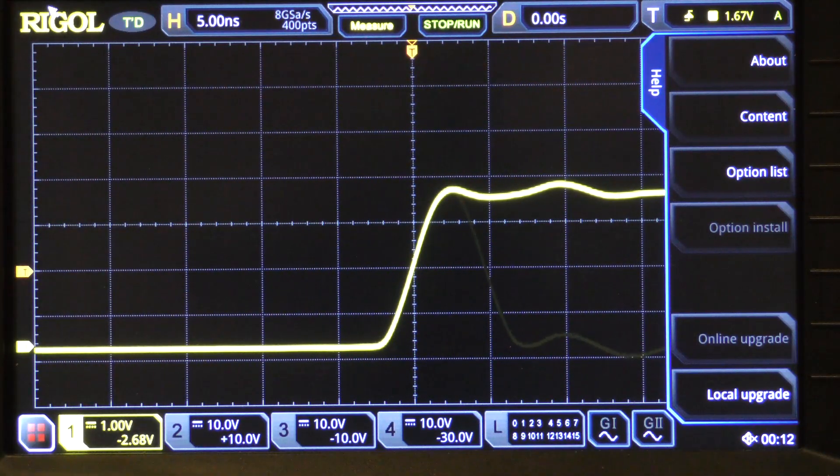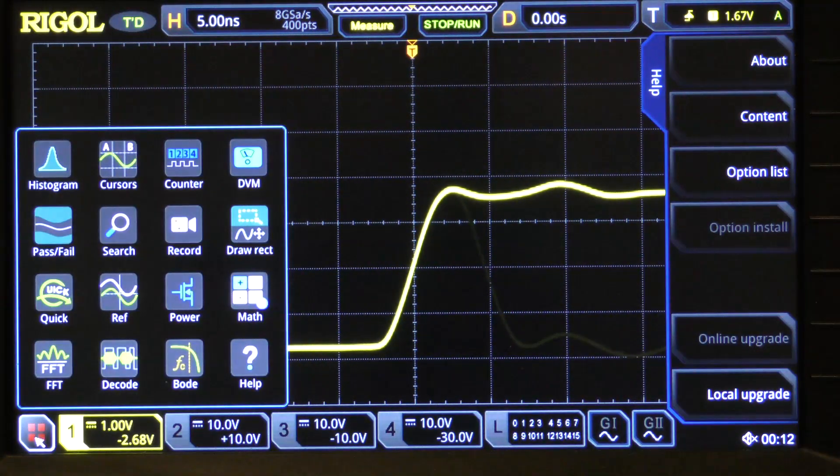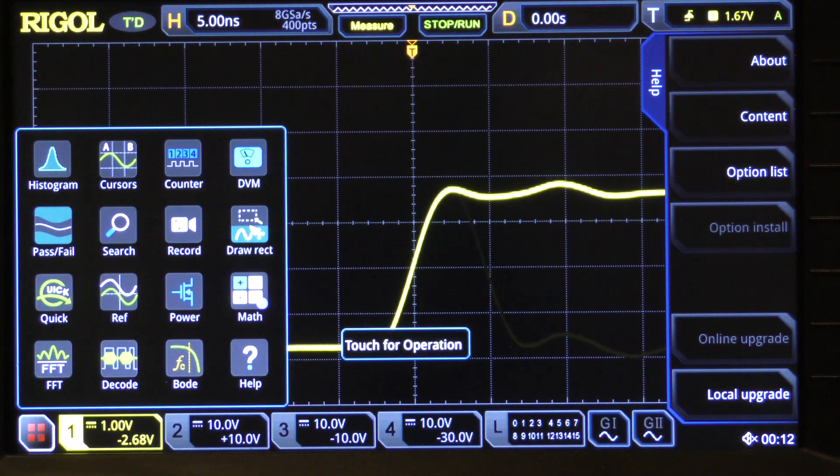Zone trigger, to enable a zone trigger, what you do is you draw a rectangle, just call it a box on the screen. Now there's a number of ways to do that. One is you can use the touch screen and your finger to do that or you can click on draw a rectangle here in the menu and notice it says touch for zone.